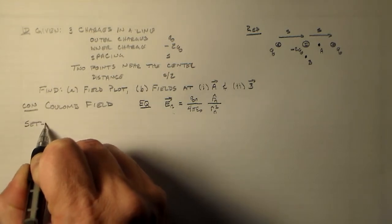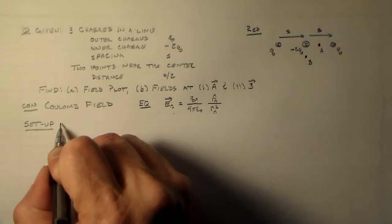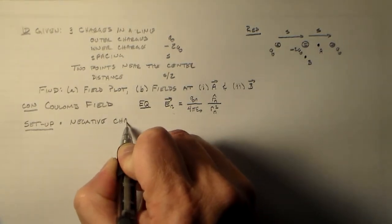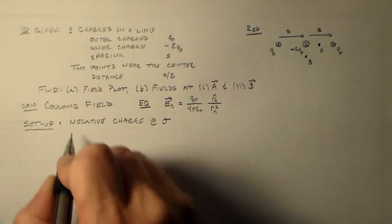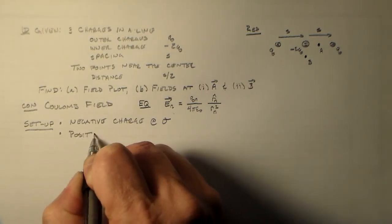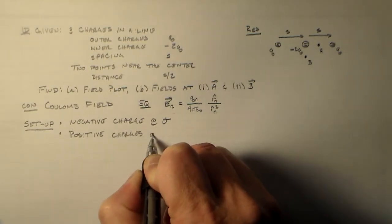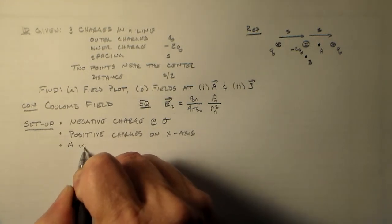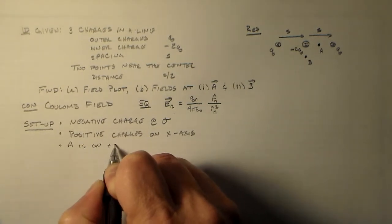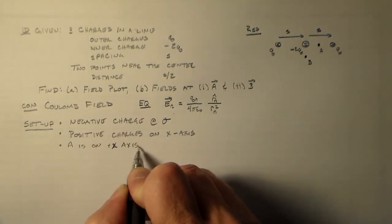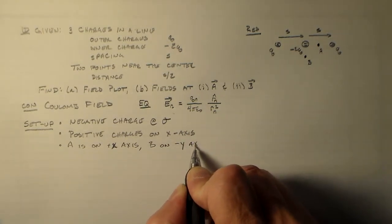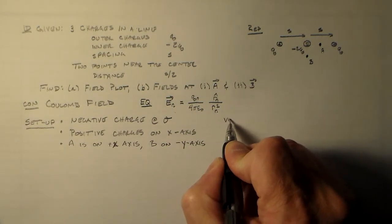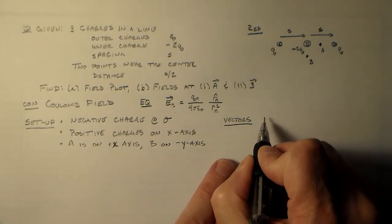Here in class, I went through the setup in detail. So we put the negative charge at the origin. And we put the positive charges on the x-axis. And then A is on the x-axis, on the positive x side, and B is on the positive side of the x-axis, the negative side of the y-axis. So that's pretty reasonable. We even went through and found some vectors for each one of those things.